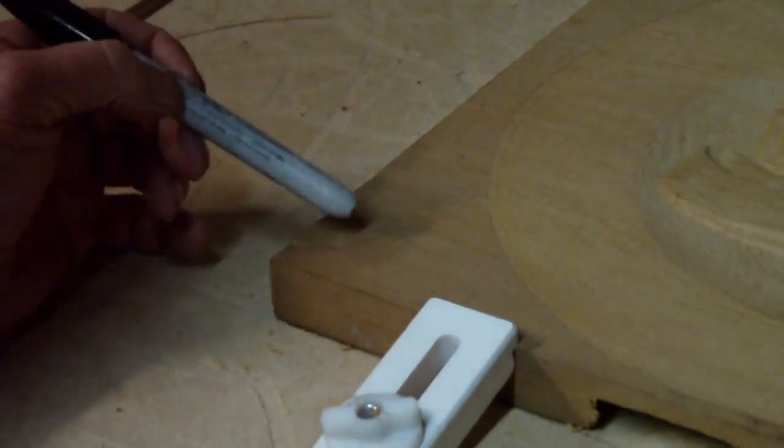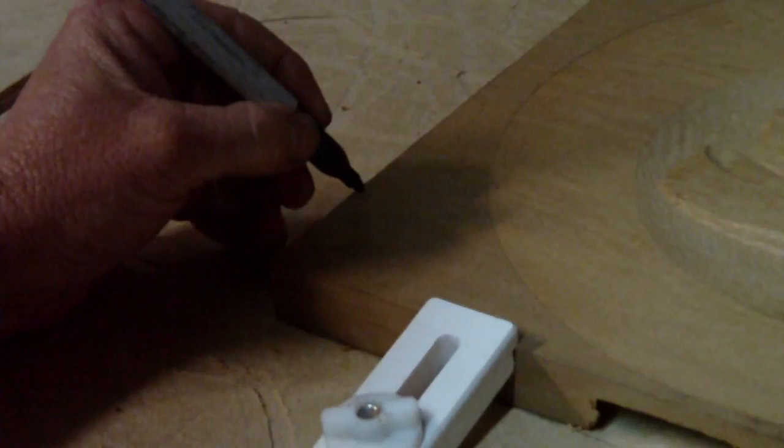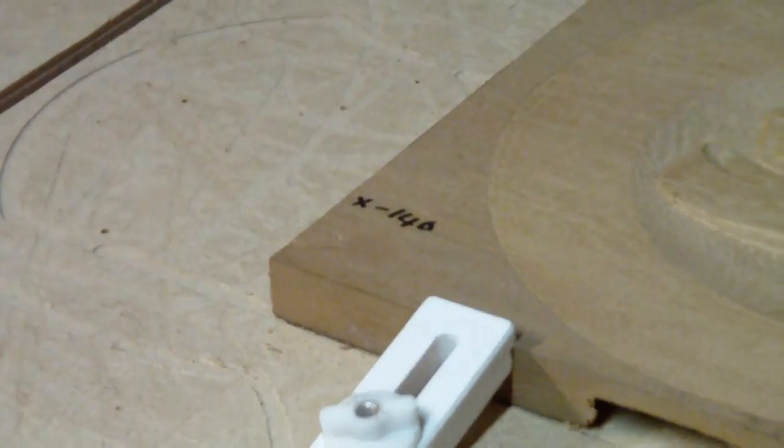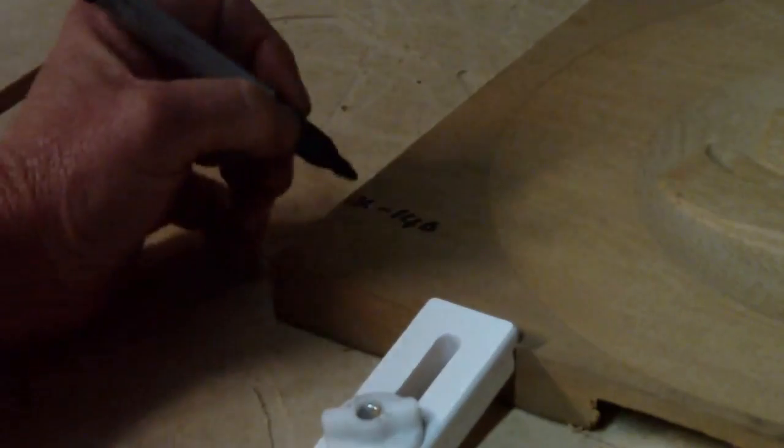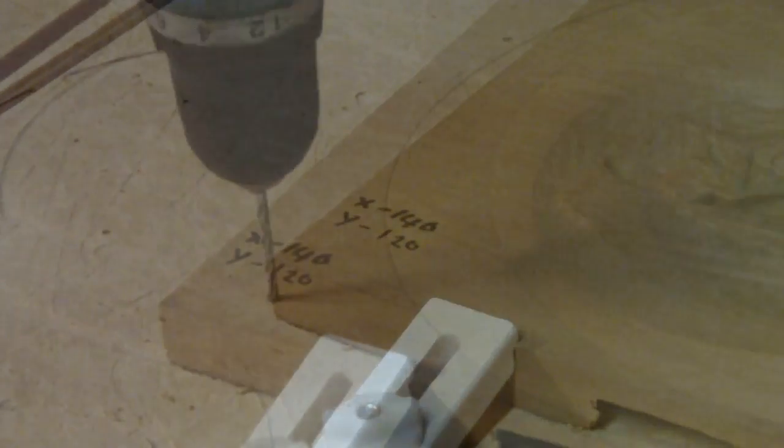Right, so I've just made a wee mark here with a 60 degree V cutter. I'm now going to mark on here X minus 140, Y minus 120 and that's that spot's position.